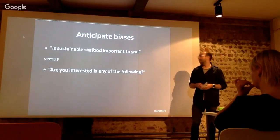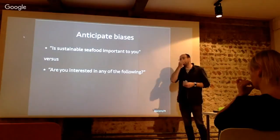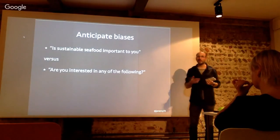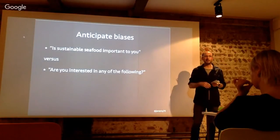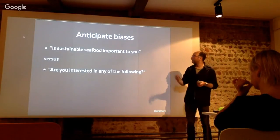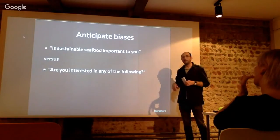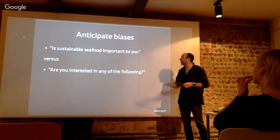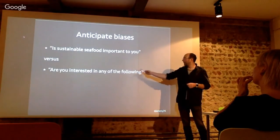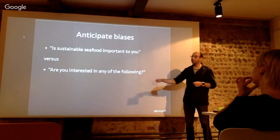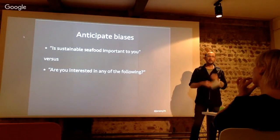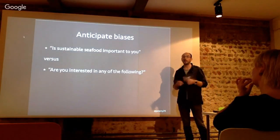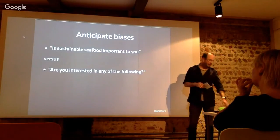Anticipate biases. We were doing a screener to recruit people on Gumtree for a paid survey. People looking at that tend to think, 'oh, I want 30 quid, I want to spend an hour doing this.' If you ask 'is sustainability important to you?', people might be tempted to say yes because they think they won't get chosen otherwise. So a better question would be something like this one here — offer a whole bunch of options, things like fair trade and other general interest items. It makes it harder for people to guess, so you're more likely to get the information that you actually want.